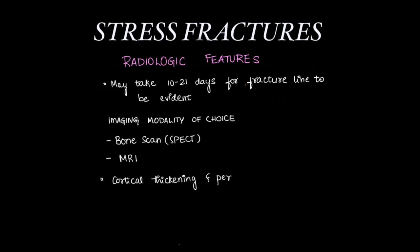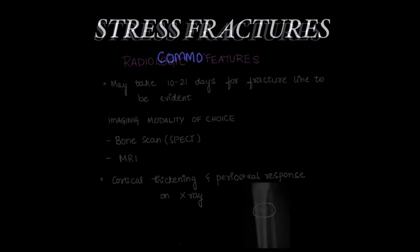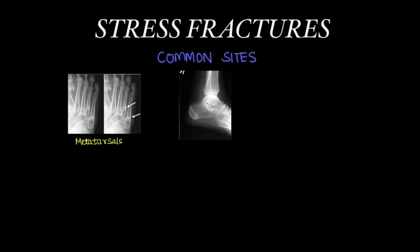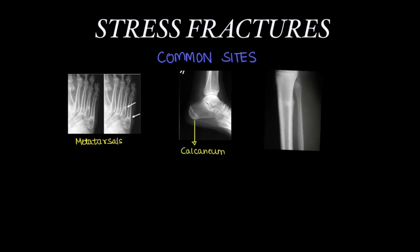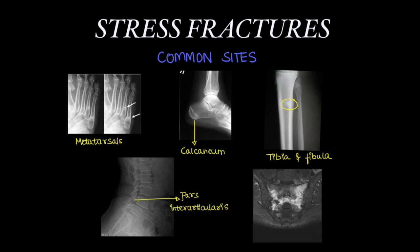There is cortical thickening and periosteal response on x-ray at the site of the stress fracture. Common sites of stress fracture include metatarsals, calcaneum, tibia and fibula, pars interarticularis, and sacrum.